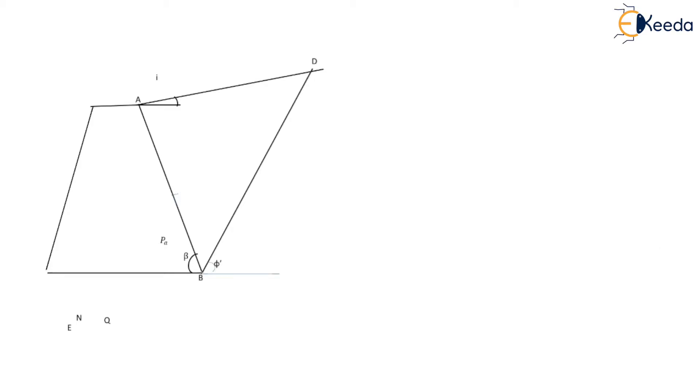Now from point B a line BD is drawn which makes angle phi dash with the horizontal. So we know phi dash is the angle of internal friction. This line BD is called as weight line because weight of the wedge is plotted along this line. We are going to discuss this later on.